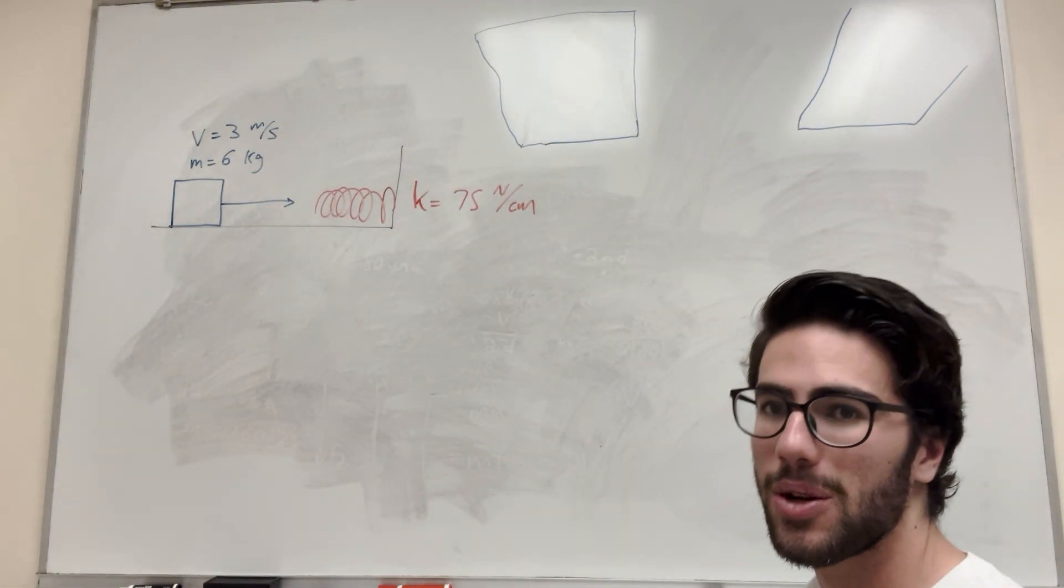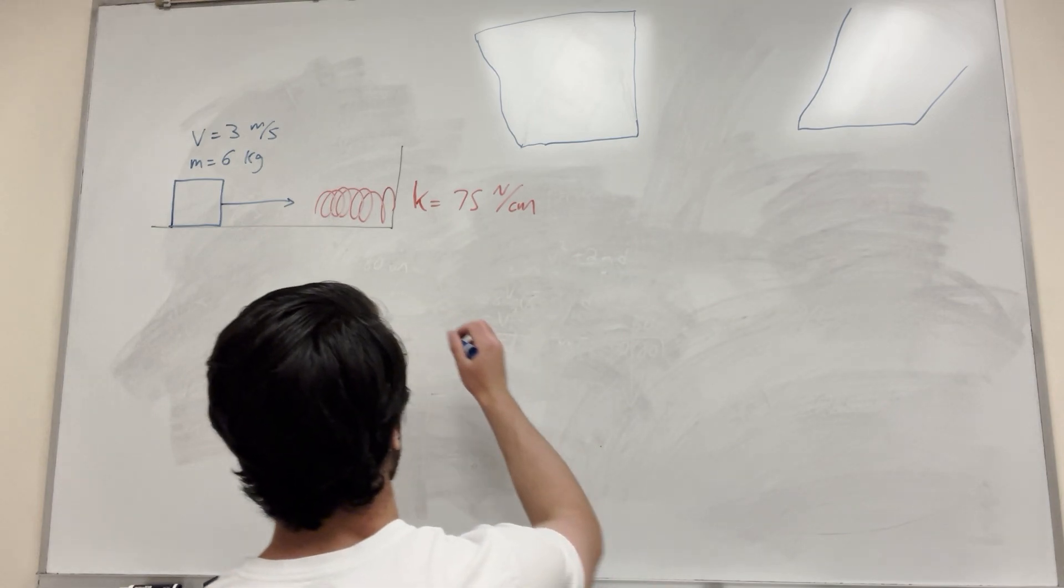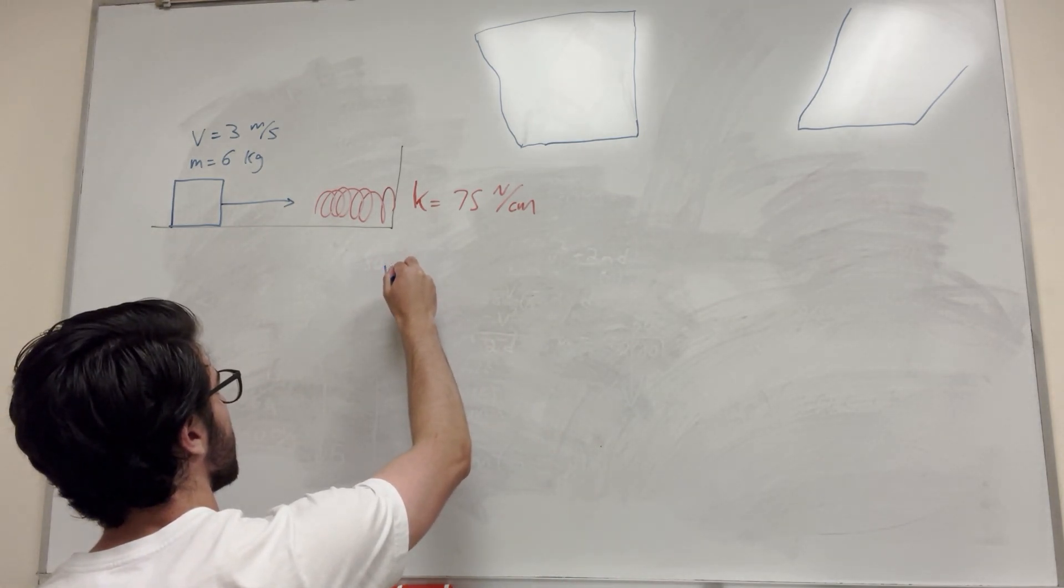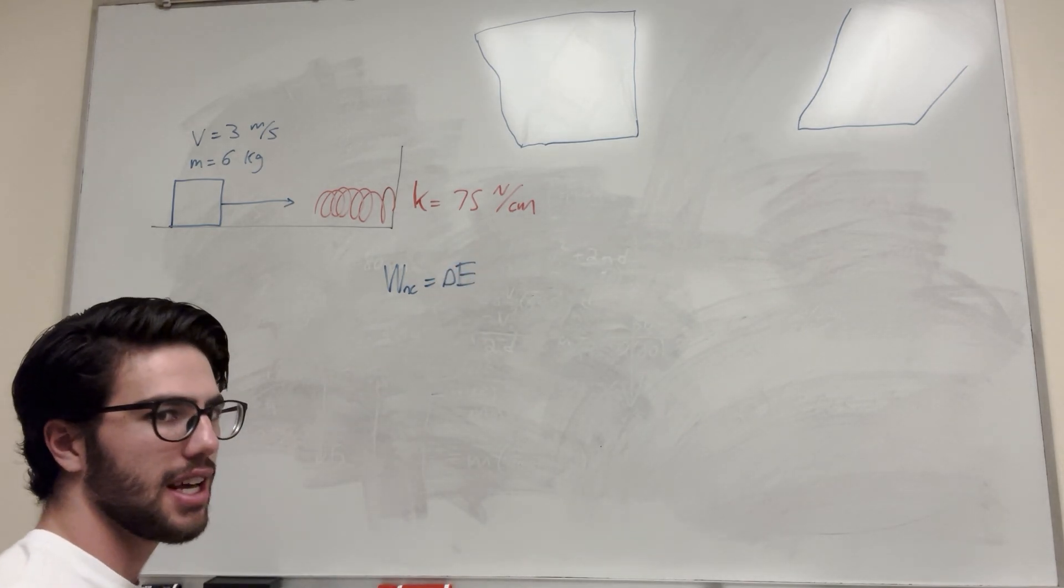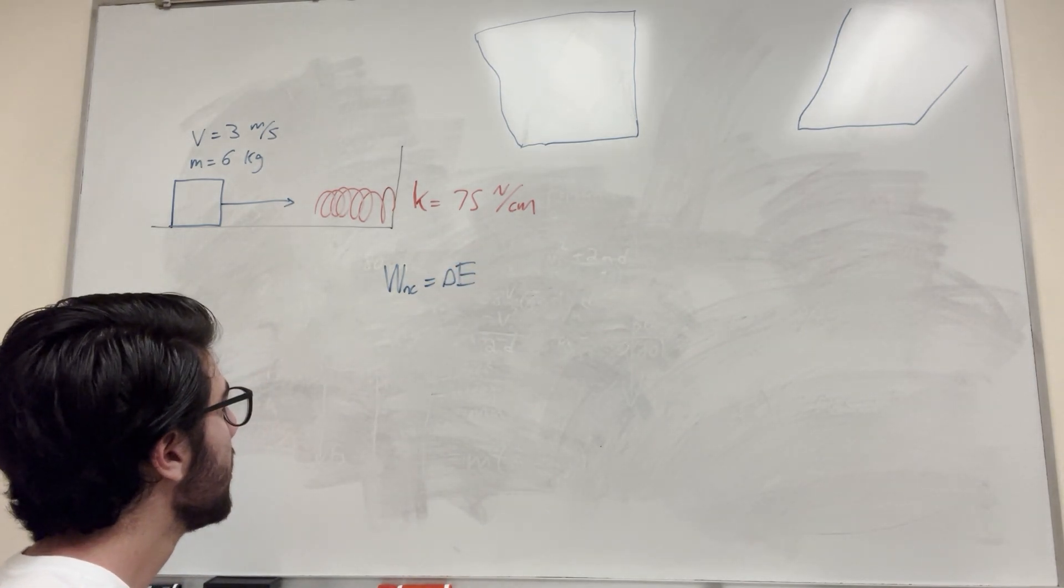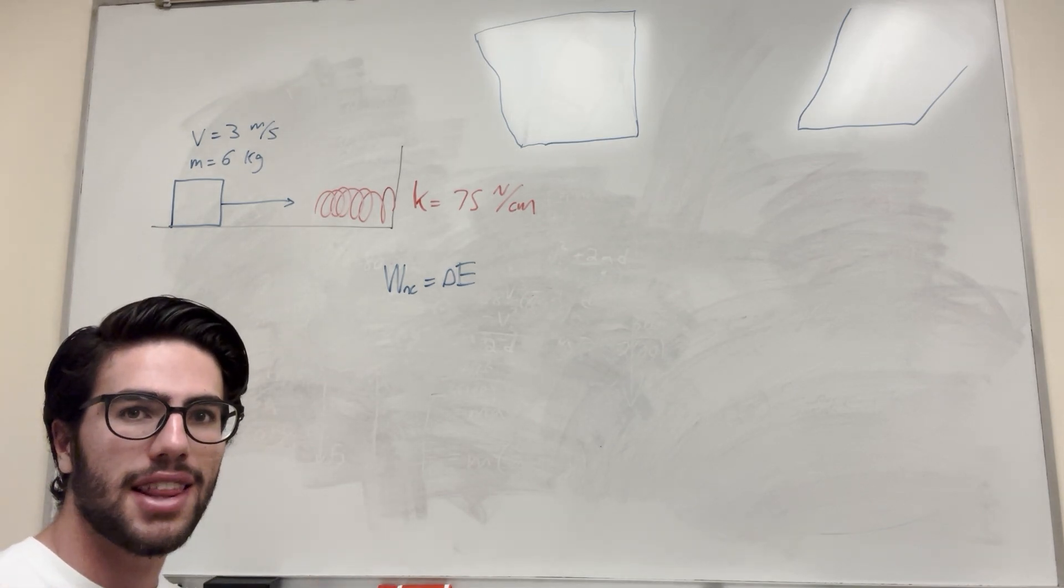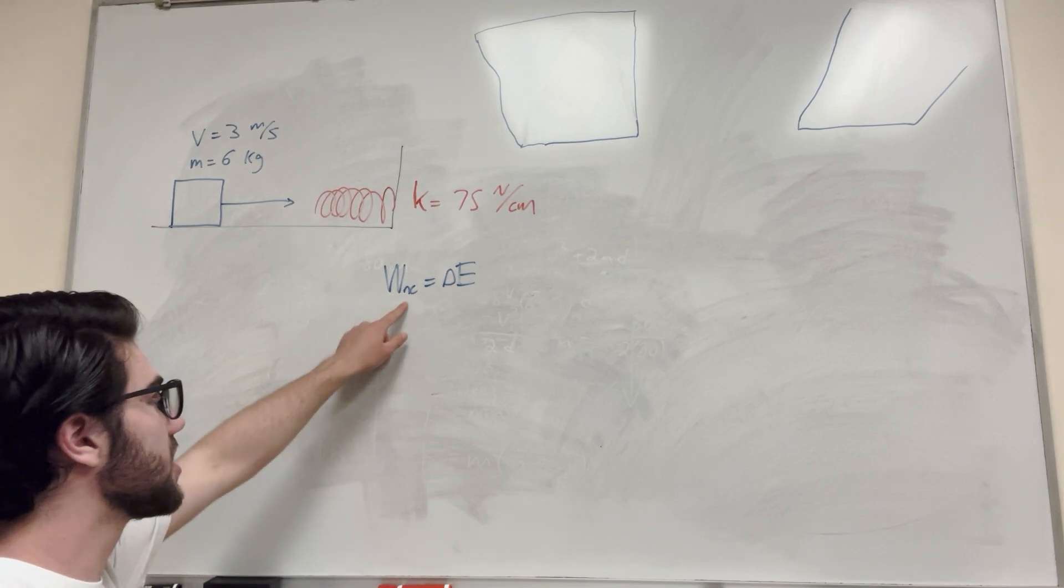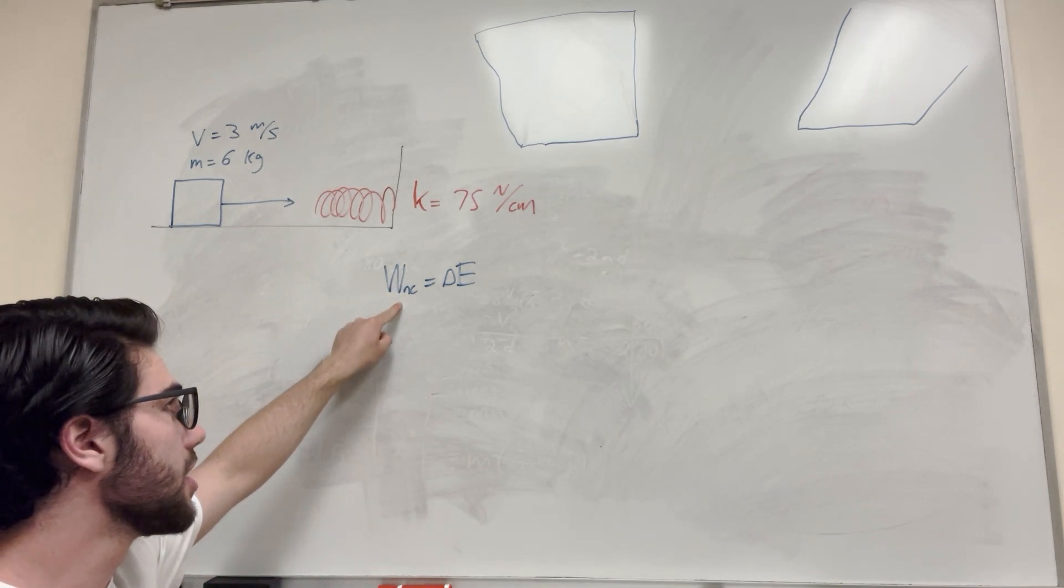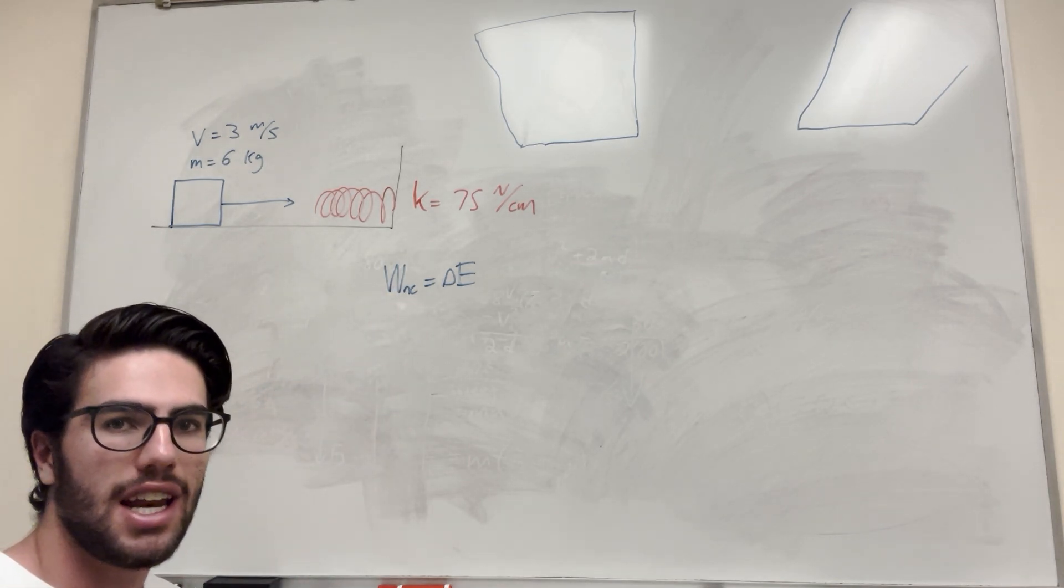So the work-energy theorem, the way I have learned it, says that work non-conservative is equal to the change in energy. By itself it's kind of hard to understand what's going on here, so we need to expand this. Always start by writing this as it's very useful. So work non-conservative - this would be friction, air resistance, any of that stuff.